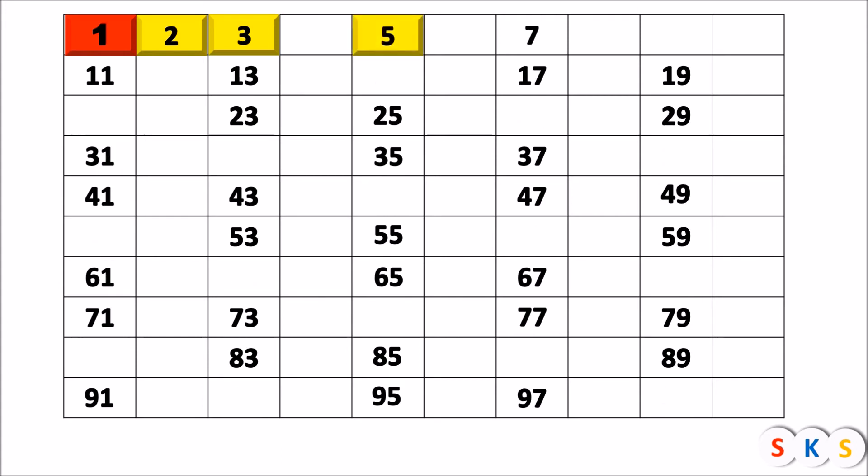Now here we have the next number 5, and 5 is a prime number because it has exactly two factors, that is 1 and 5. Now I am going to remove all multiples of 5 from this table because they will have more than 2 factors, like 25, 35, 65, 95. So I am removing all multiples of 5 from this table. You can see that I have removed all multiples of 5.